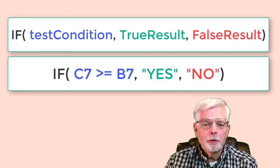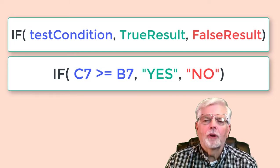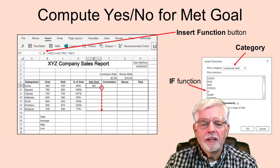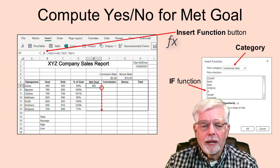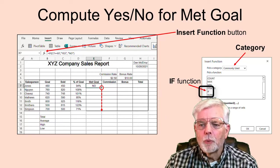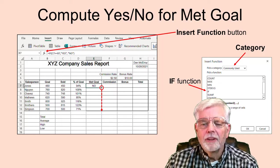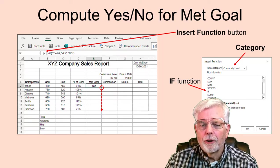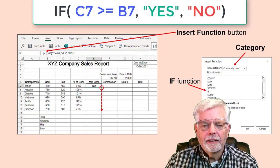The logical IF function can be used to examine the goal and sold fields and display the word 'yes' if the goal was met or display 'no' if the goal was not met. Locate the Insert Function button, F of X. Select cell E7 to compute Met Goal for the first employee. Click the F of X button. If you are lucky, you will see the IF function as one of the options in the commonly used list. If you don't see it there, you will find it by choosing the Logical category from the drop-down menu. Select IF and click OK.